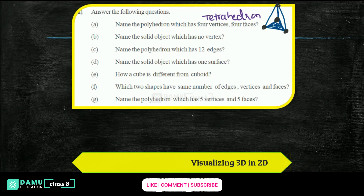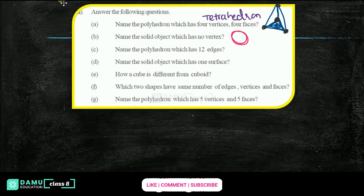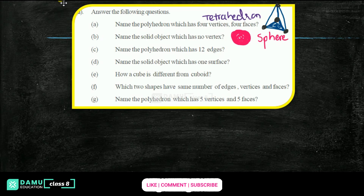Next one: name the solid object which has no vertex. Which has no vertex means it definitely has a circular shape — not a square but a circle. Then it will have the shape of a sphere. A sphere — there is no vertex for this.